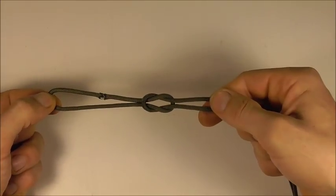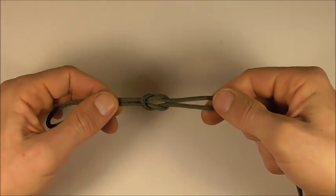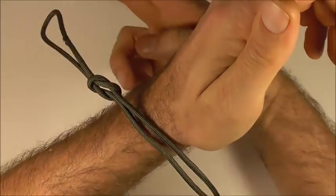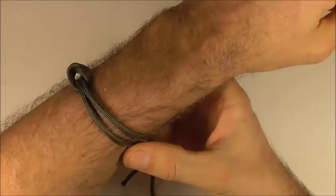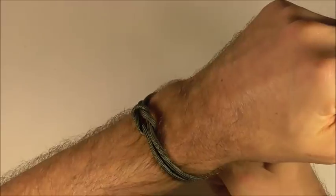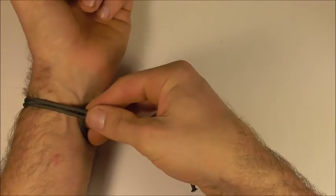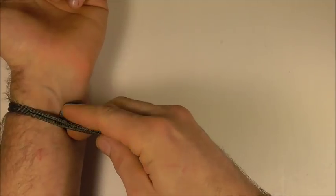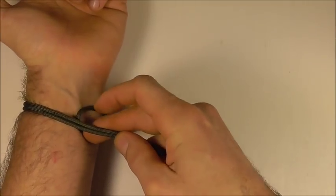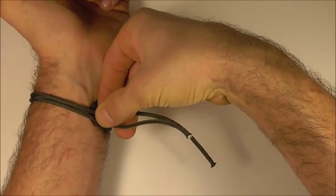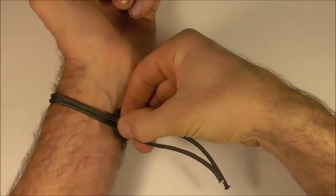Then just measure it out against your wrist again and put the square knot in the center. Then go to the other side, and the end of your loop should be around about the center of your wrist. You should have enough free to tie a button as well.